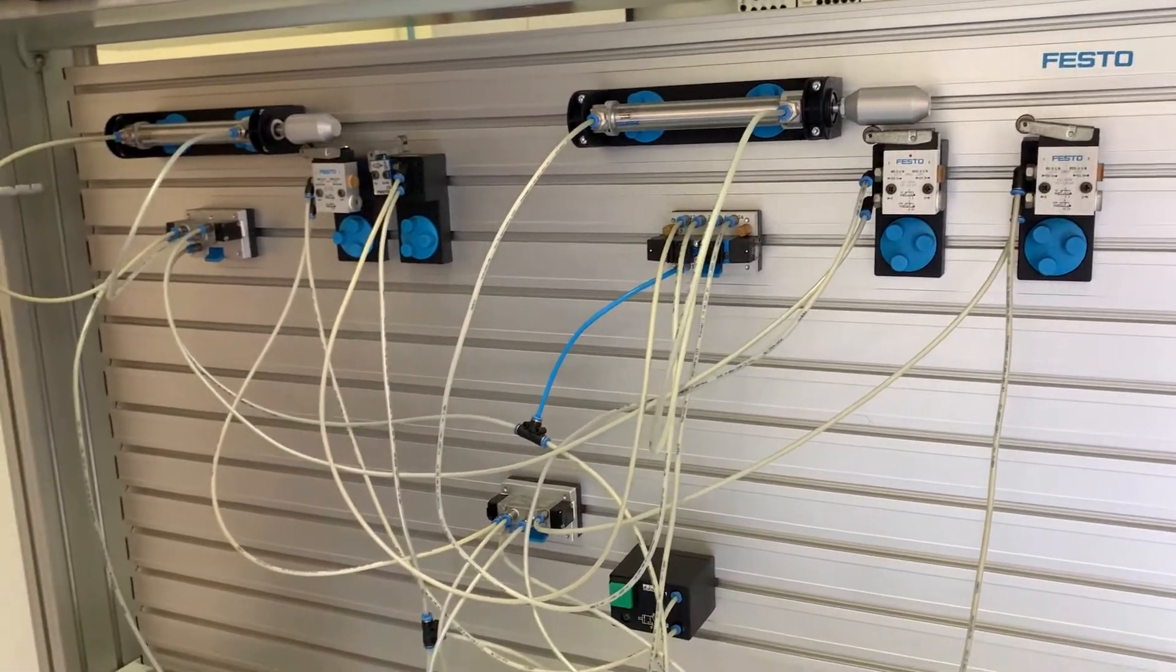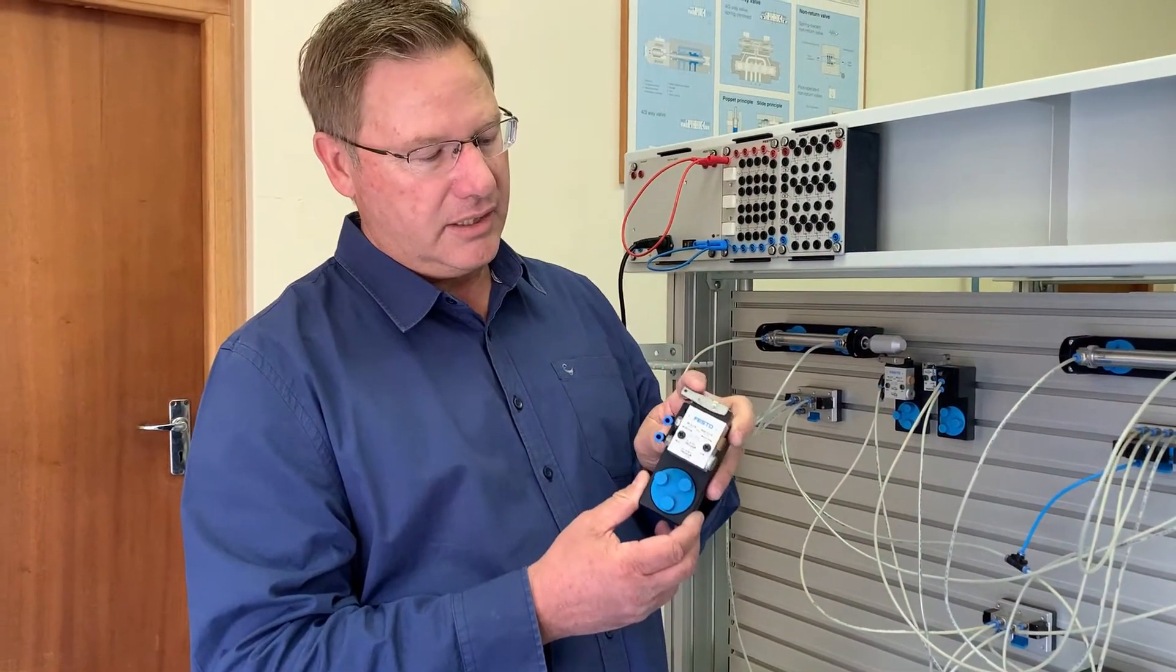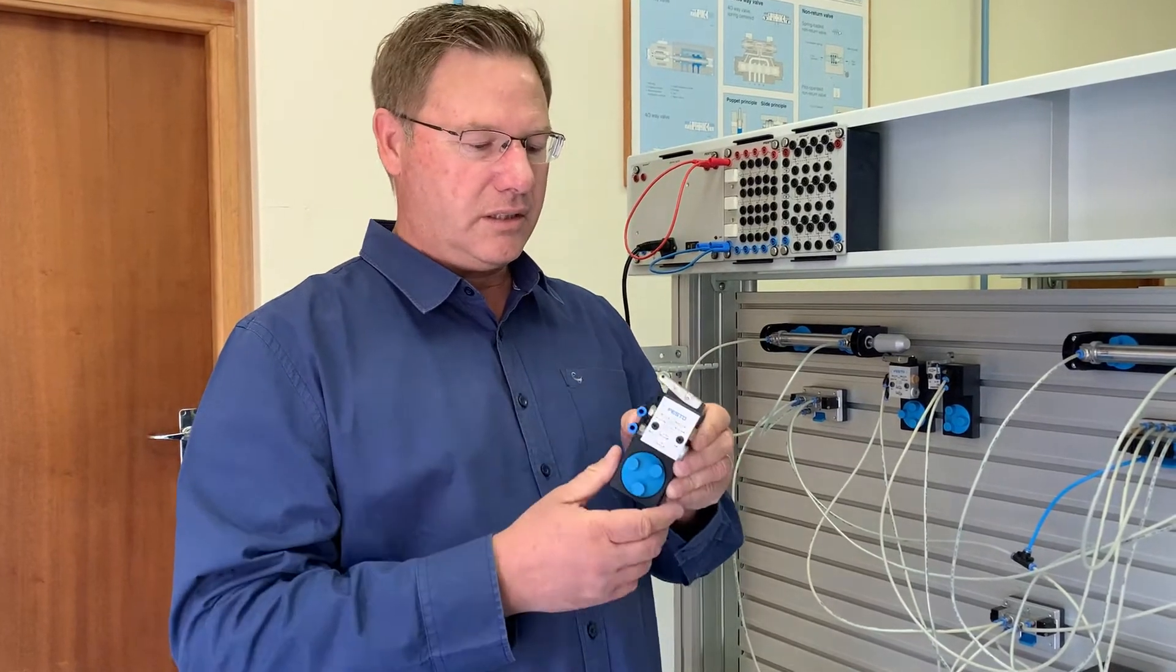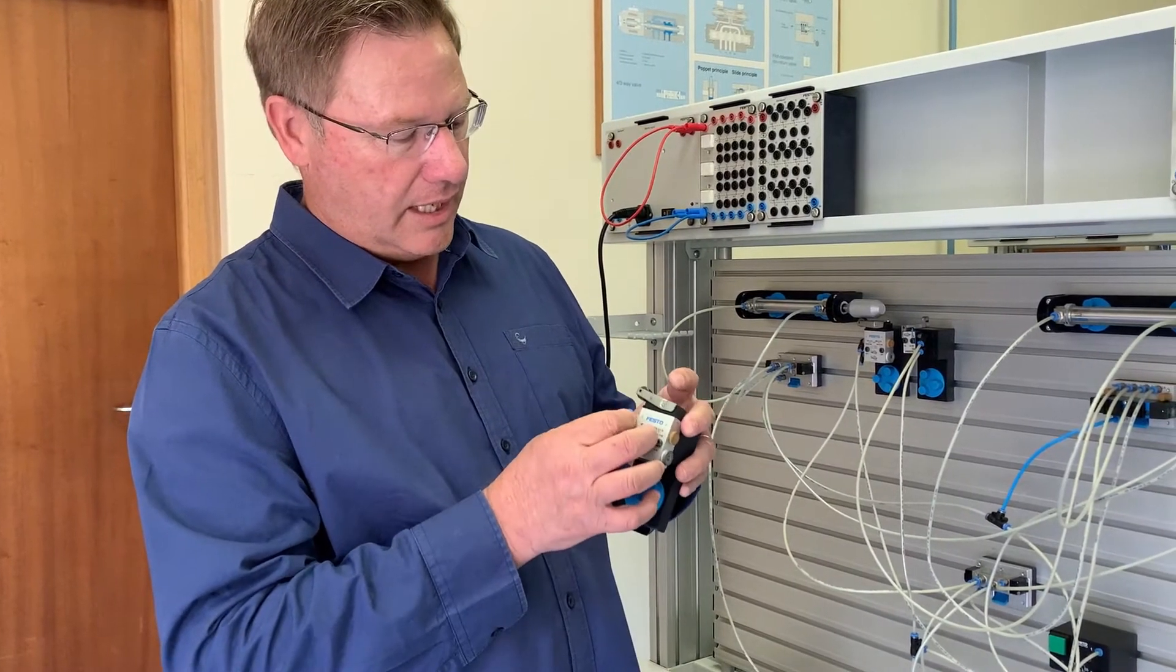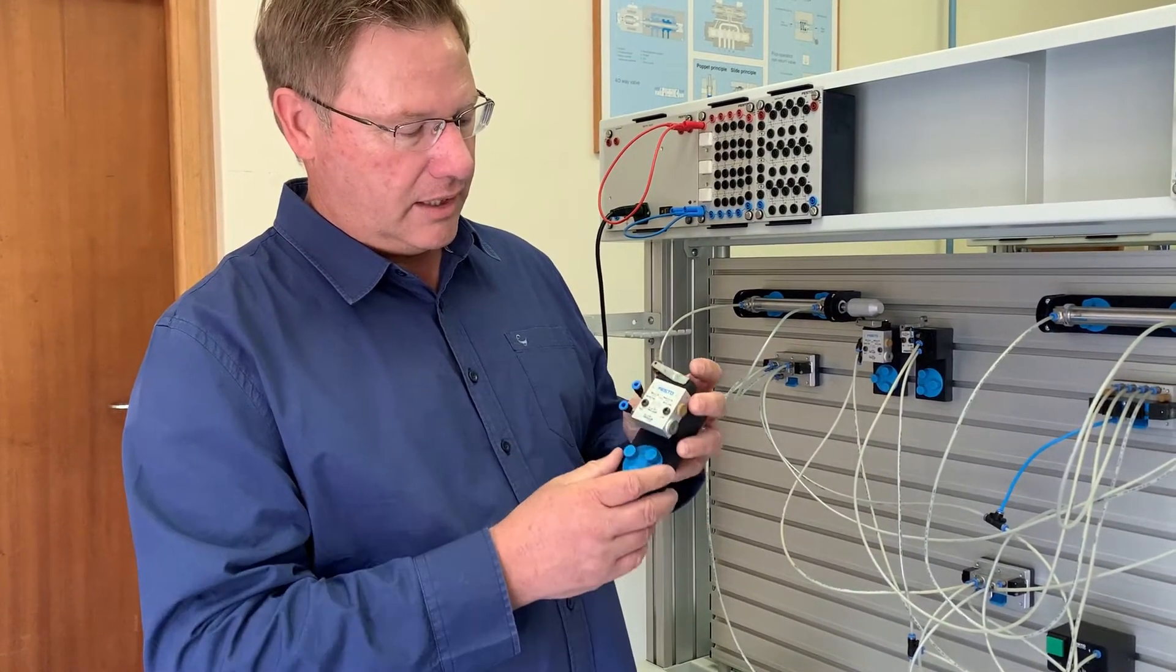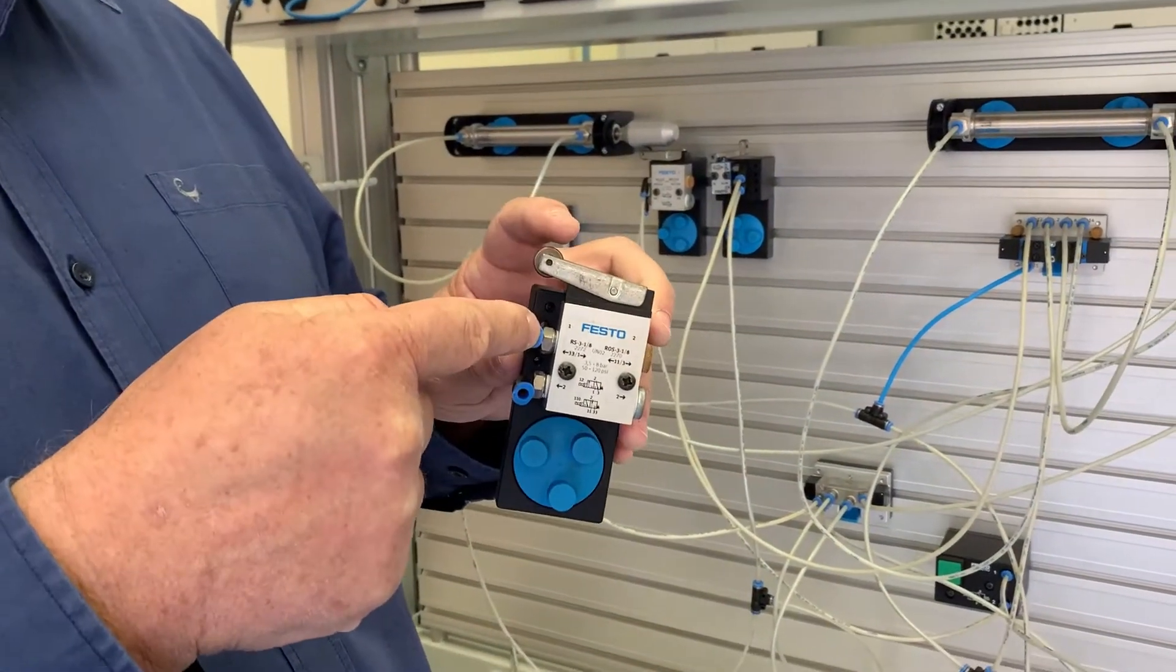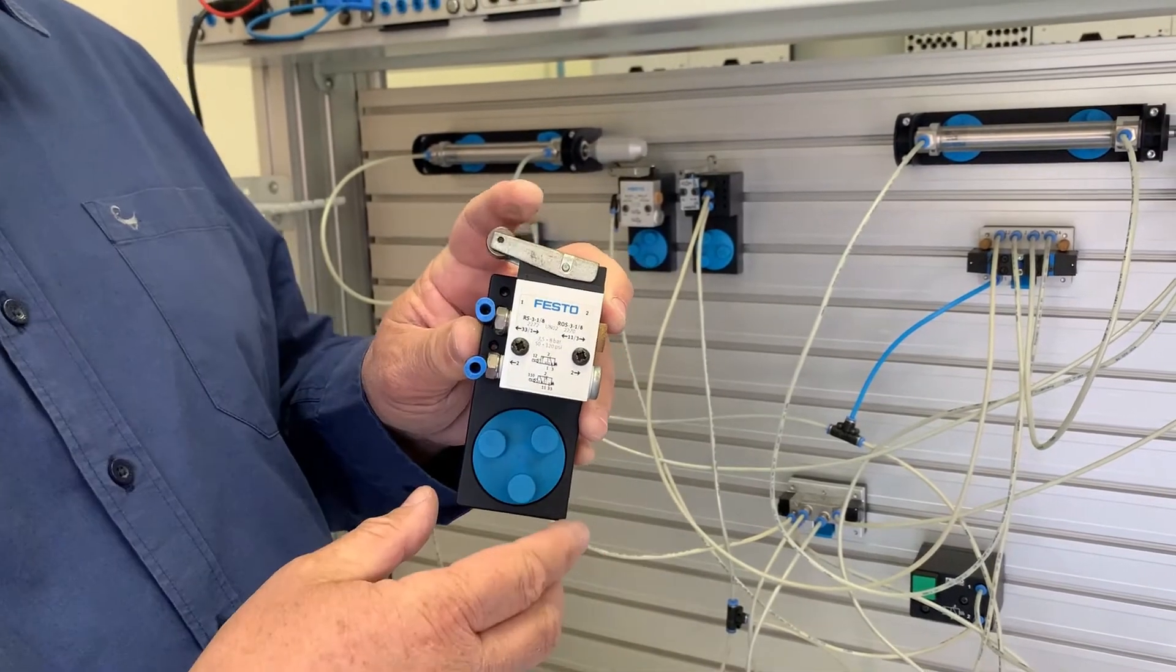The other components we've got are limit switches and as you can see it's a mechanical lever, it's got a little roller follower on it. You will have seen the diagrams but here you can see what it looks like in real life and it's basically a valve on the inside. The air supply comes into port number one and when you push it then it allows the air supply to come out of port number two.